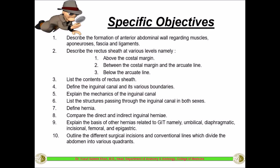Objective six is to list the structures passing through the inguinal canal in both male and female. Seven is to define hernia. Eight is to compare direct and indirect inguinal hernia. Nine is to explain the basis of other hernias related to the GIT, namely umbilical hernia, diaphragmatic hernia, incisional hernia, femoral, and epigastric hernias. The last objective is to outline the different surgical incisions and conventional lines which divide the abdomen into various quadrants.